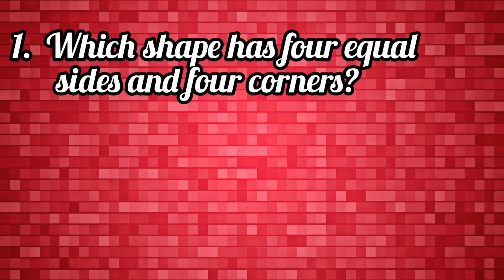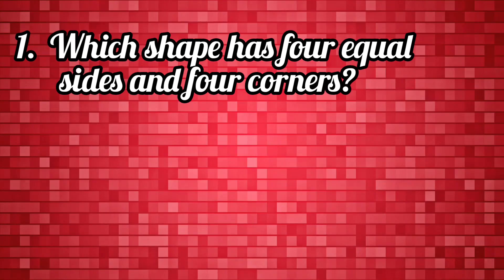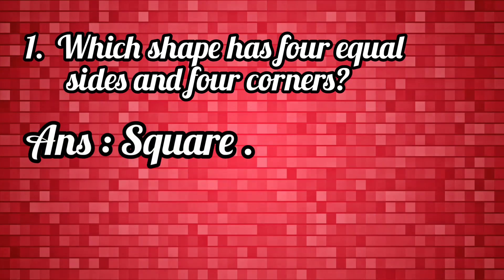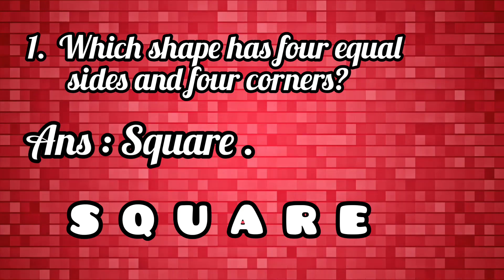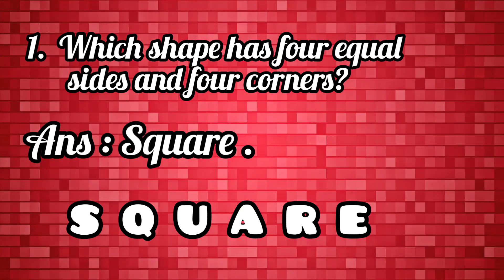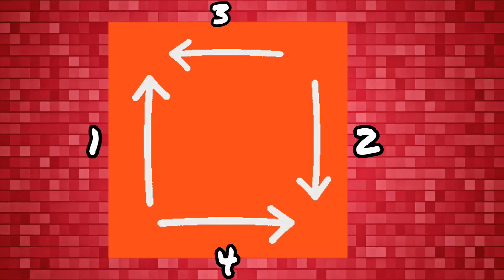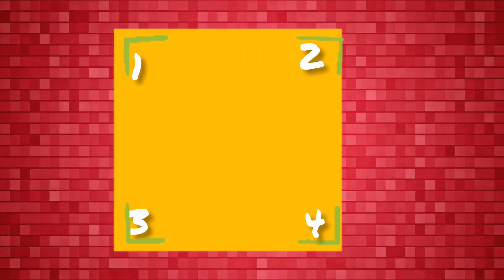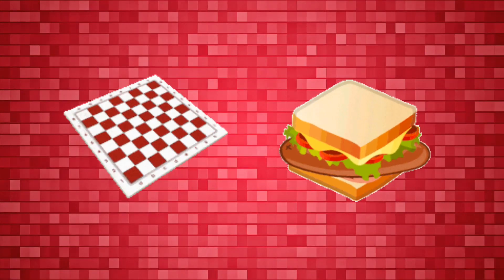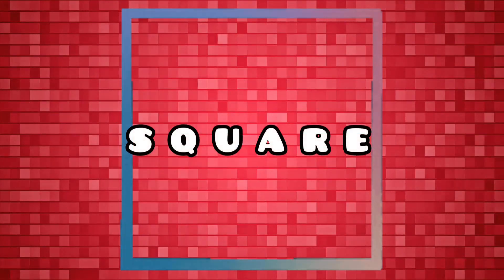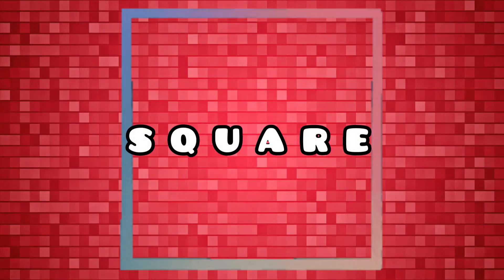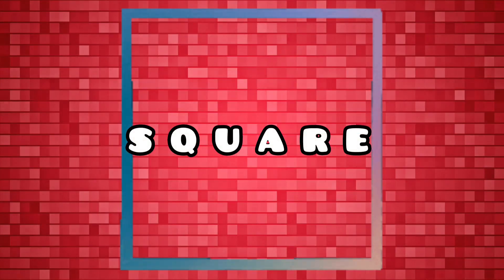Which shape has four equal sides and four corners? Square. S-Q-U-A-R-E. A square has four equal sides and four corners. For example, a chessboard and a sandwich. S-Q-U-A-R-E, square.